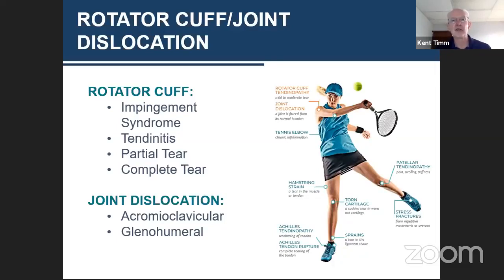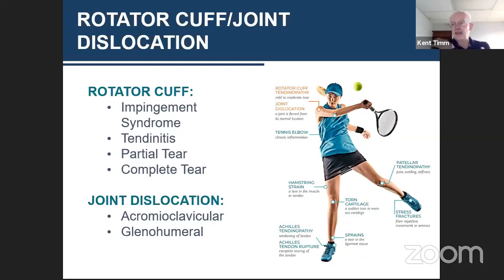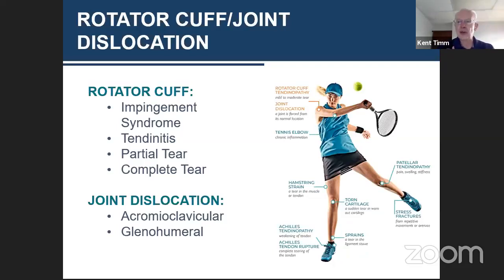It doesn't happen that often, but it is possible to experience an actual dislocation at the shoulder — primarily of the acromioclavicular joint, the AC joint. If you feel around, you'll feel a natural little divot as you come out from your collarbone to the point of your shoulder. The ligaments that support this joint can become strained or ruptured, causing the joint to dislocate. Back in the day, this was called a shoulder separation, and it usually occurred more in contact sports like football or wrestling, but it can occur in racquet sports.